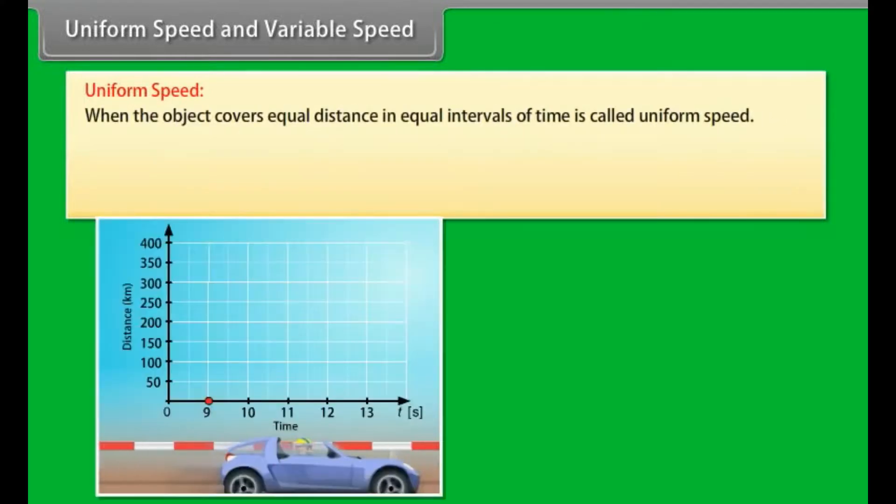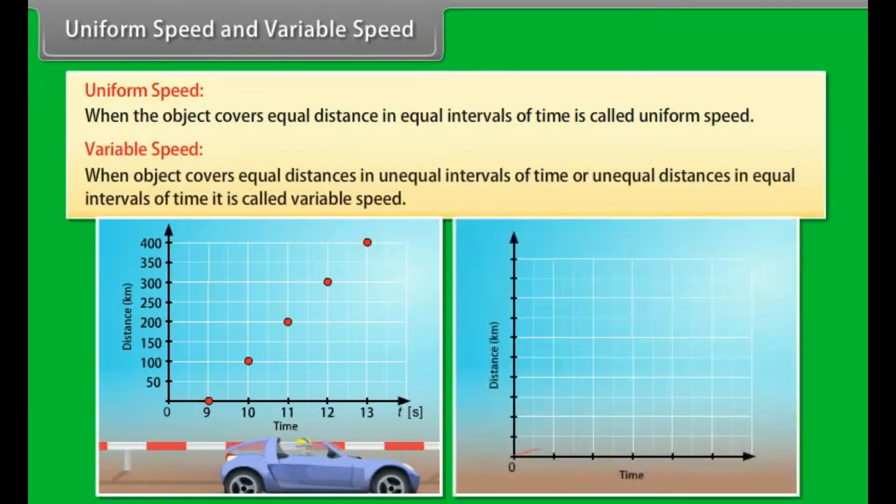Uniform speed and variable speed. Uniform speed: When the object covers equal distance in equal intervals of time is called uniform speed. Variable speed: When the object covers equal distances in unequal intervals of time or unequal distances in equal intervals of time, it is called variable speed.